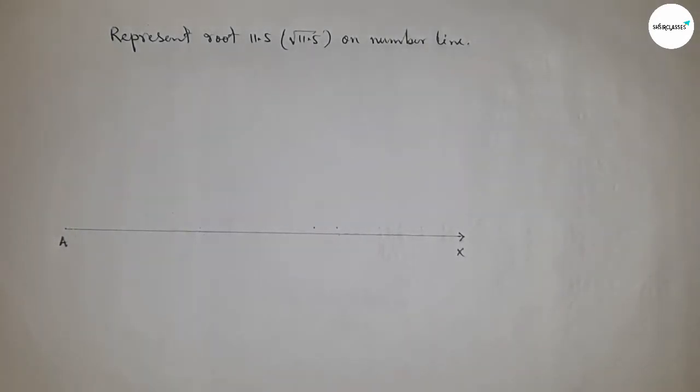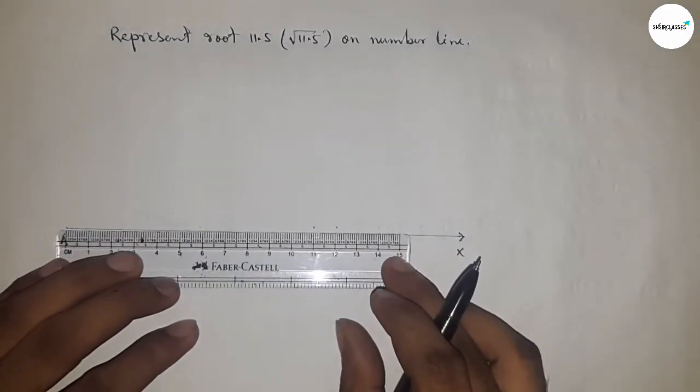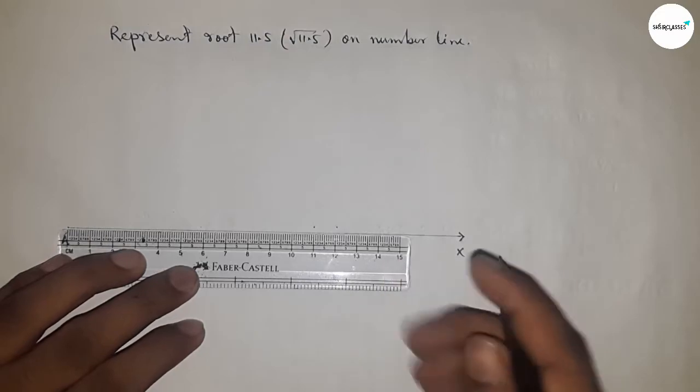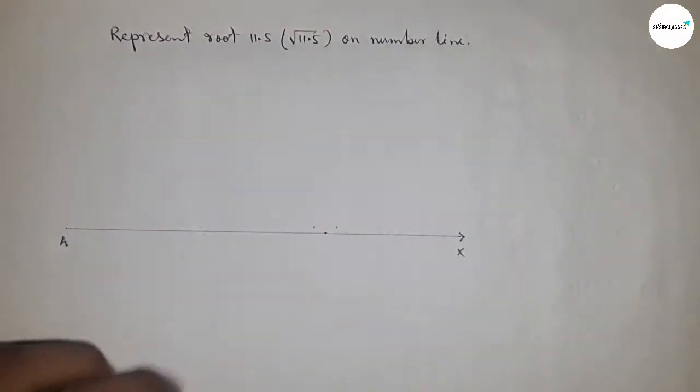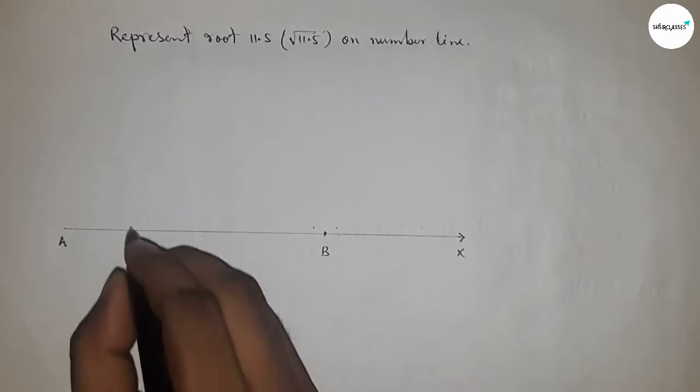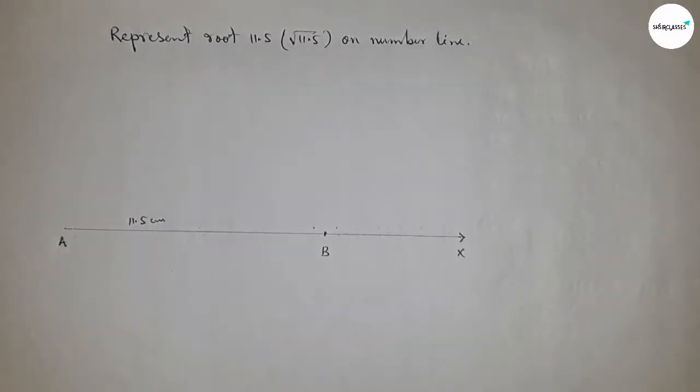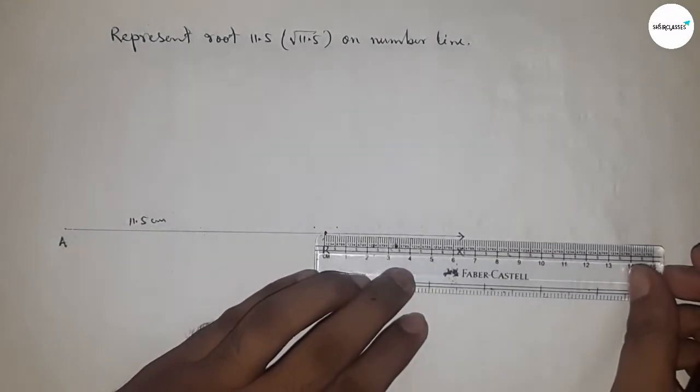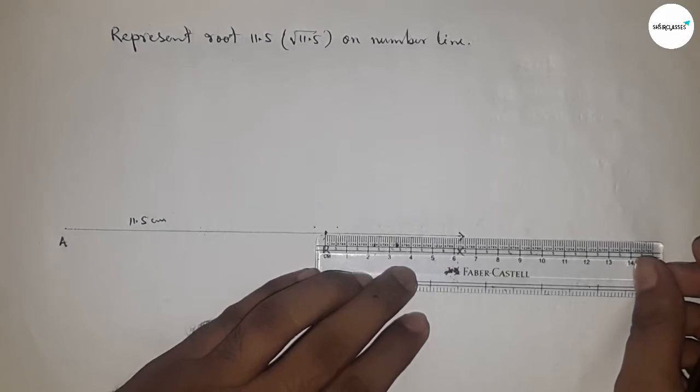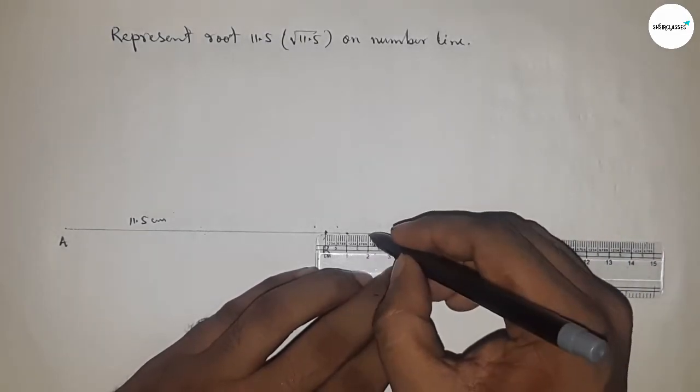Next, take 11.5 centimeters using a scale. So here is 11.5, this is point B, and AB is 11.5 centimeters. Next, mark the numbers on the line from B to X by using a scale.